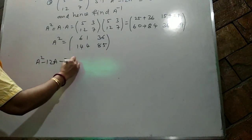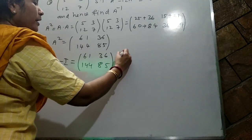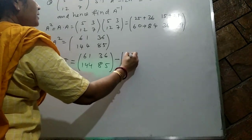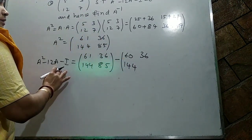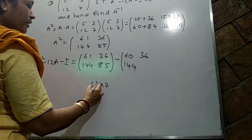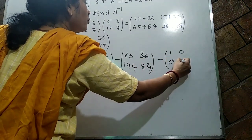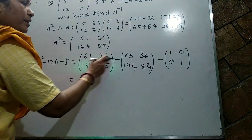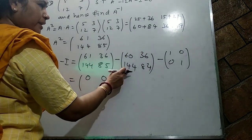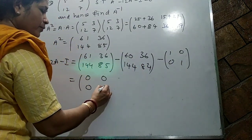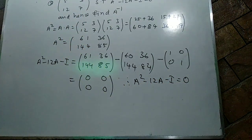Now compute A² minus 12A minus I: [61,36;144,85] minus 12×[5,3;12,7] minus [1,0;0,1]. Subtracting: 61-60-1=0, 36-36=0, 144-144=0, 85-84-1=0. We get the null matrix. Therefore we have proved A² minus 12A minus I equals the null matrix.